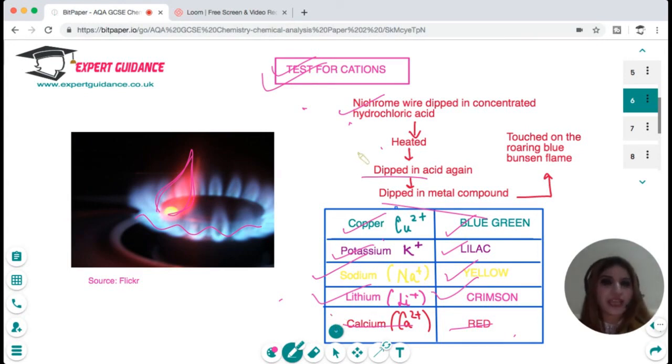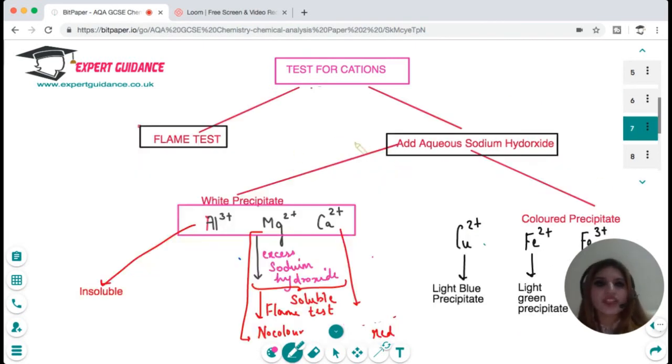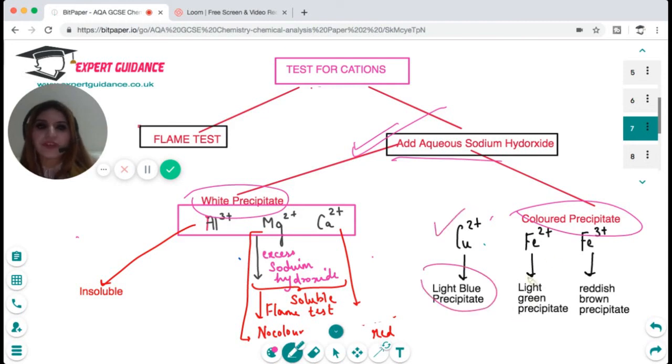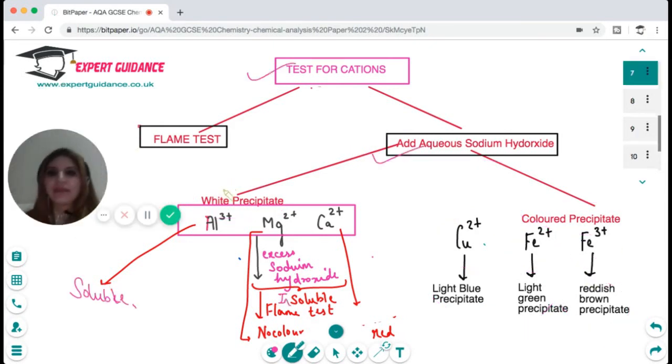There are certain metal ions which are not distinguishable by this flame test, so we have an alternative test which is we add aqueous sodium hydroxide and we see the precipitate. When we add aqueous sodium hydroxide we either see a white precipitate or a colored precipitate. If there's a colored precipitate of blue color it is of copper. If it is light green color it is of iron 2+, and if it is reddish brown it is iron 3+.